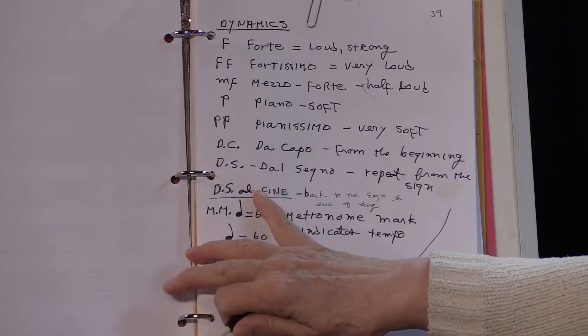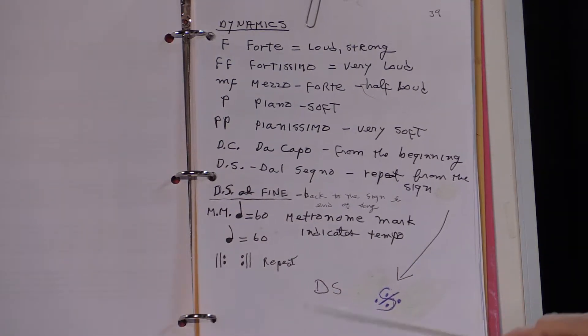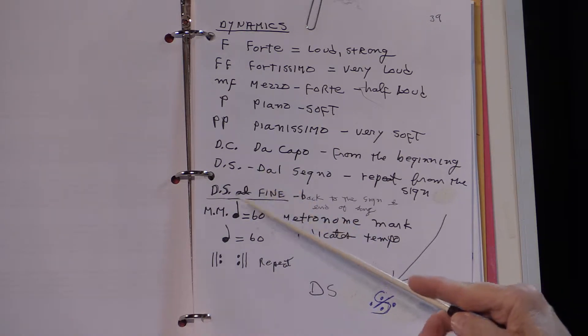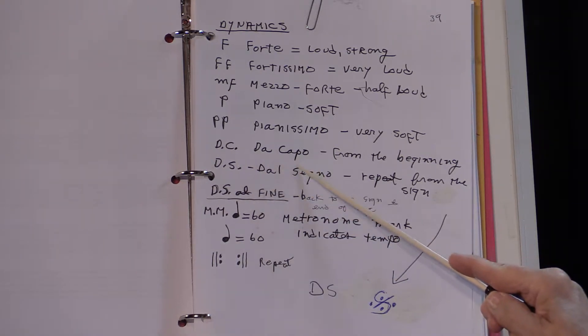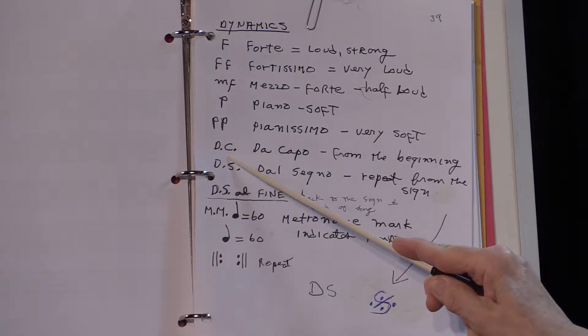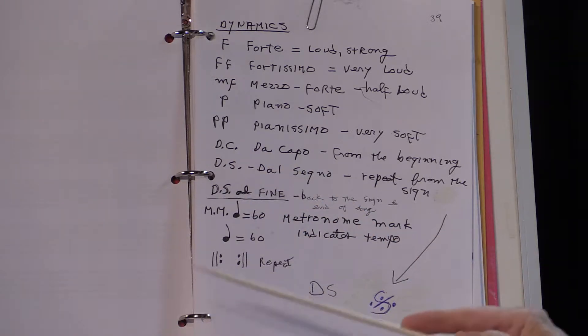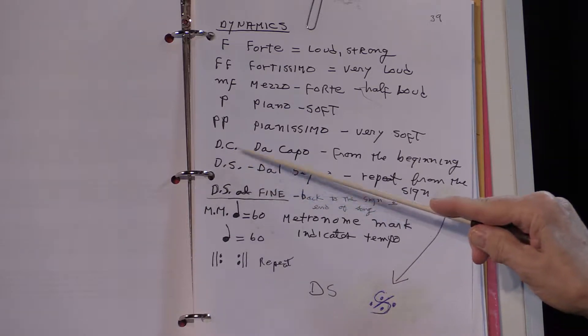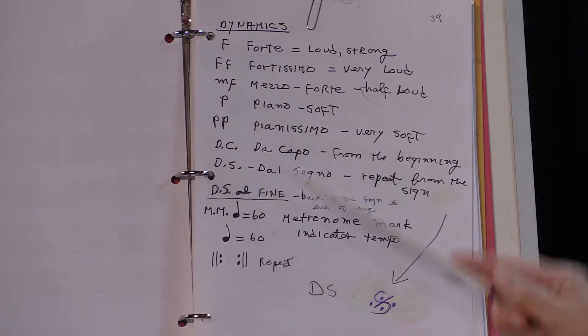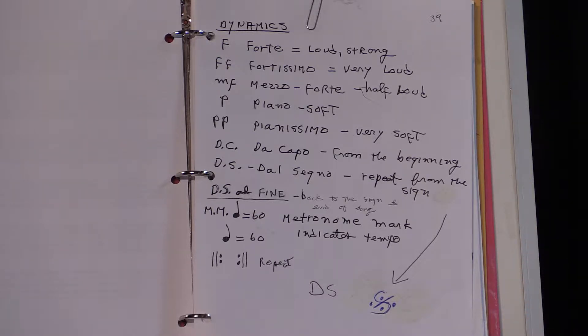If we look at this chart here, I'm not going to go through all of them, just the ones we'll be using. I'm particularly paying attention to this DC — De Capo. When you have a DC, it means go back to the beginning of the music. There won't be any sign at the beginning, but this tells you that's where you're supposed to go.